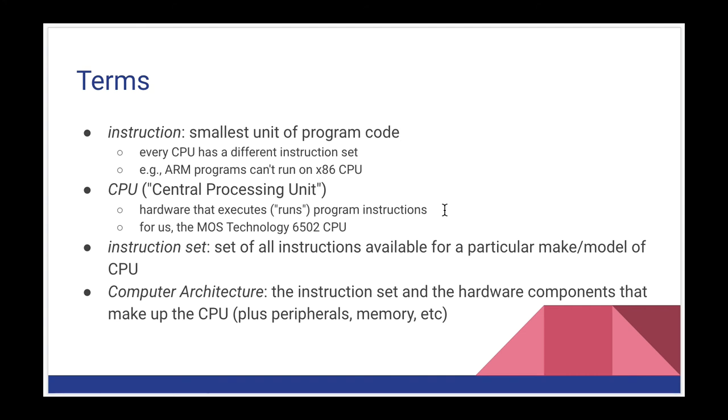The CPU is the central processing unit, the hardware that executes and runs program instructions. For us, we're using what's called the MOS Technology 6502 CPU. The instruction set is the set of all instructions available for a particular make, model, and CPU. It encompasses everything, all the different instructions that can be run on the CPU. Collectively, we call this the computer architecture. The instruction set and the hardware that make up the CPU, plus things like the peripherals and memory are included as part of that.